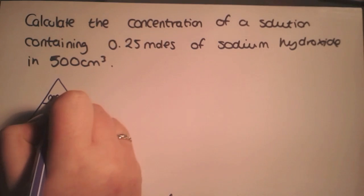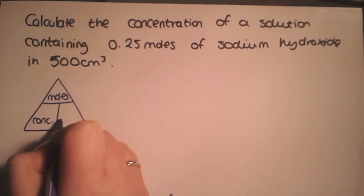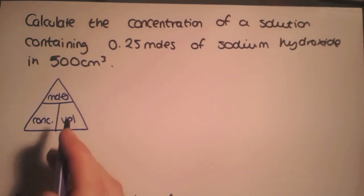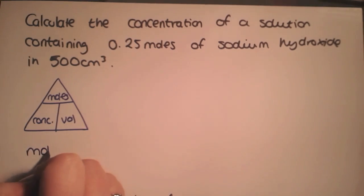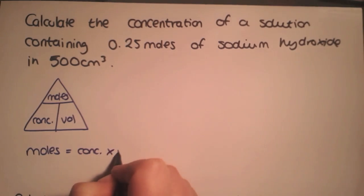At the top of the triangle you have moles, and then underneath you have concentration and volume. It's important to remember that volume is in litres and concentration is in moles per litre. So you must check if you need to convert volumes into litres. You can also write this out as moles equals concentration times volume, and then rearrange from there.